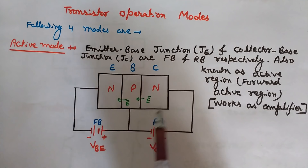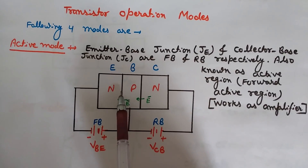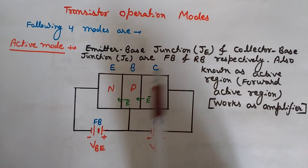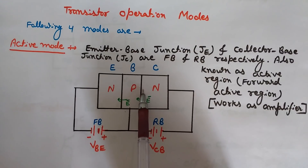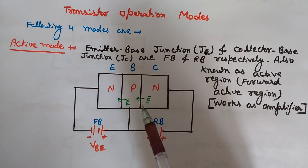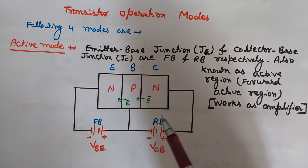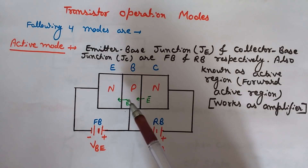In active mode, we have two junctions. This is called the emitter-base junction, also written as JE, and this is the collector-base junction, written as JC. In active mode, the emitter-base junction is forward biased while the collector-base junction is reverse biased. When higher voltage is applied to the P side and lower to the N side, the junction gets forward biased.